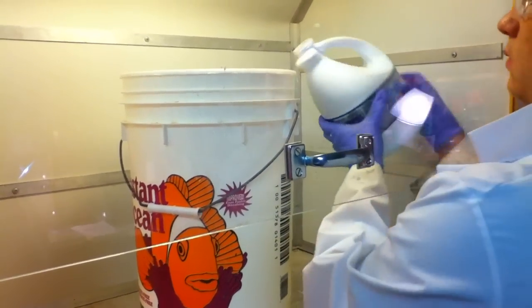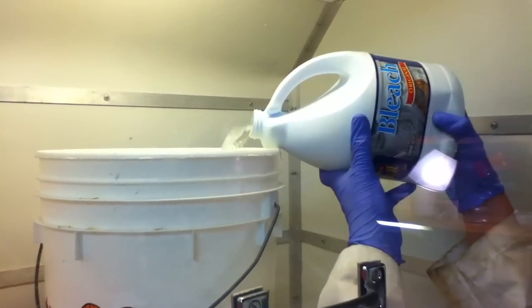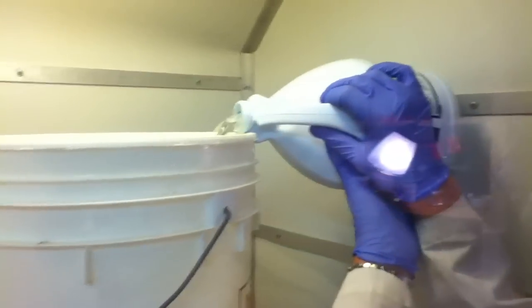First, add 5 gallons of generic store-bought bleach to a large container. It should be the cheapest you can find to have the least number of surfactants and additives.